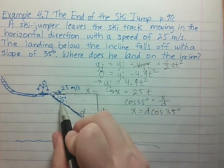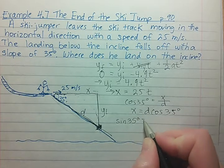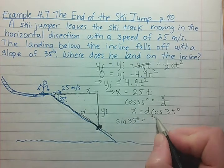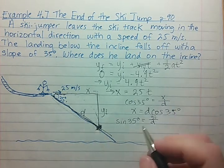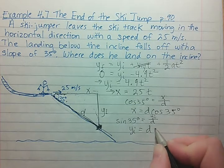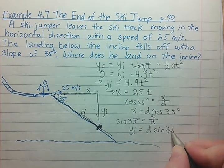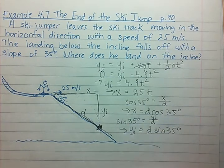If we take the sine of 35 degrees, we end up with yi over d, opposite over hypotenuse. So we end up with yi equals d sine of 35. So this equation is important and this equation is important.